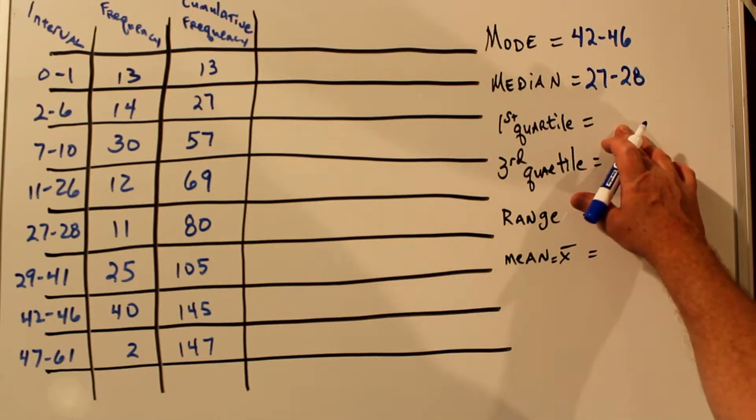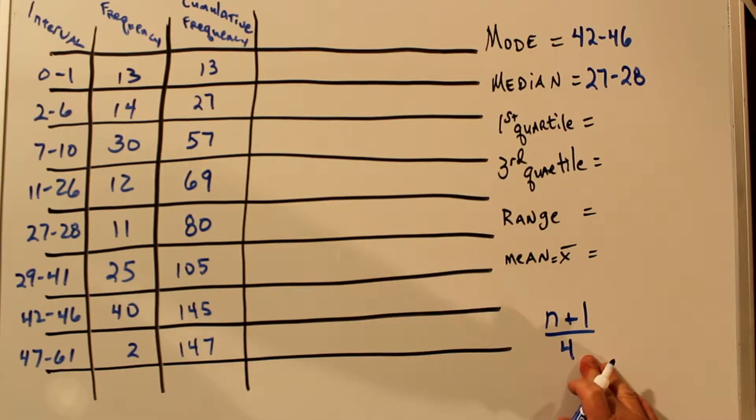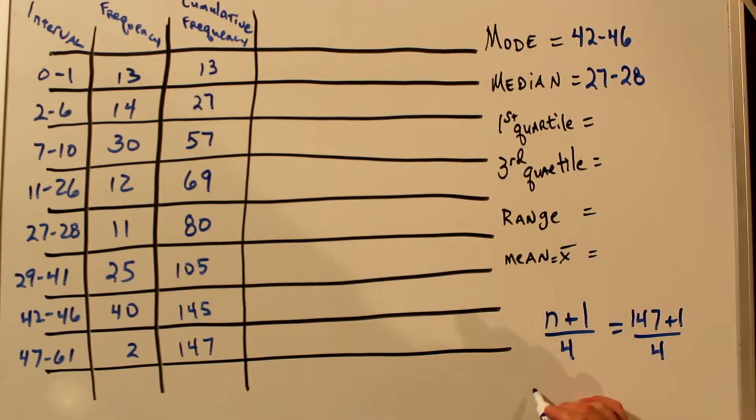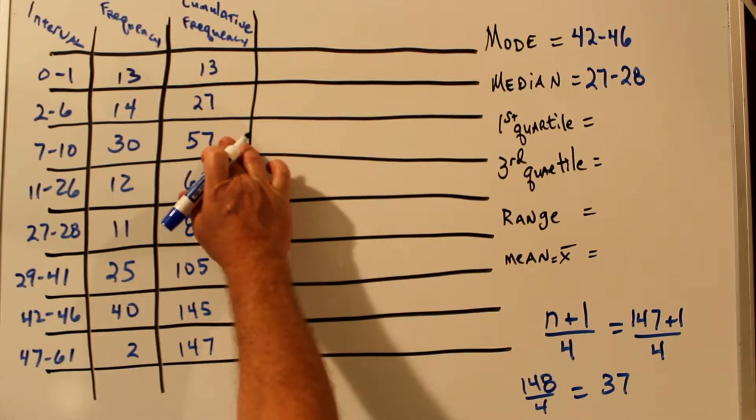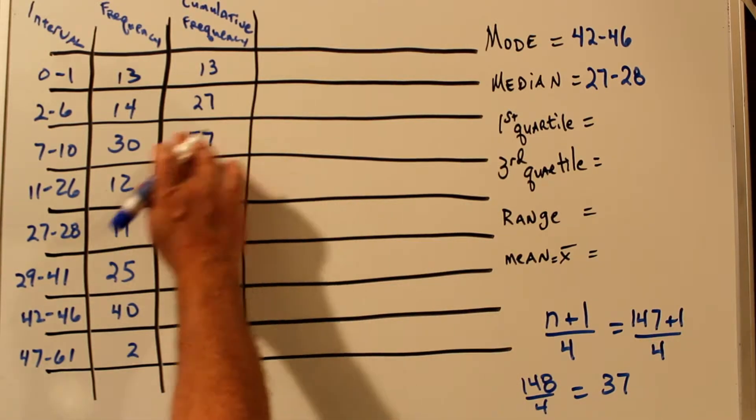Now finding the first quartile is similar. We take our N plus one, but this time divide it by four because we want one fourth of the way instead of one half of the way. So that's 147 total data points plus one divided by four, which is 148 divided by four. So our first quartile is the one that contains the 37th data point. So we look down our list, 27 ends here and 57 ends here. So the 37th data point is in this category, seven to 10.